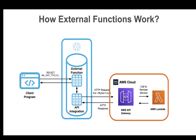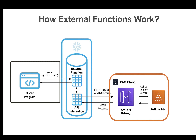So, how do external functions work? Snowflake does not call a remote service directly. Instead, Snowflake calls the remote service through a cloud provider's native HTTPS proxy service, for example, the API Gateway on AWS. The main steps to call an external function are: first, a user's client program passes Snowflake a SQL statement that calls an external function.